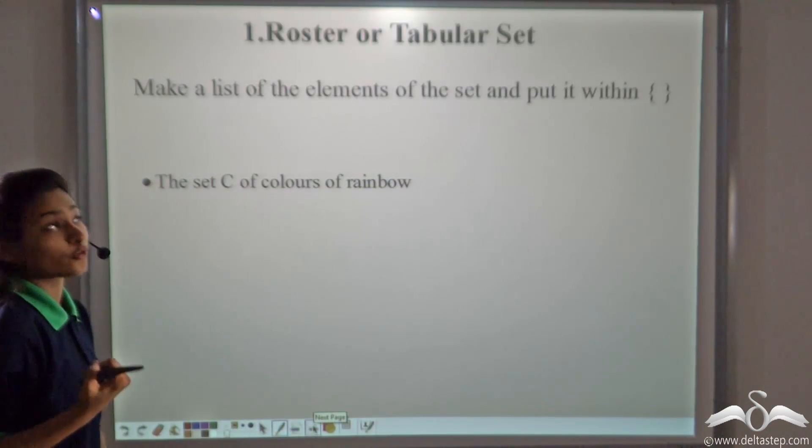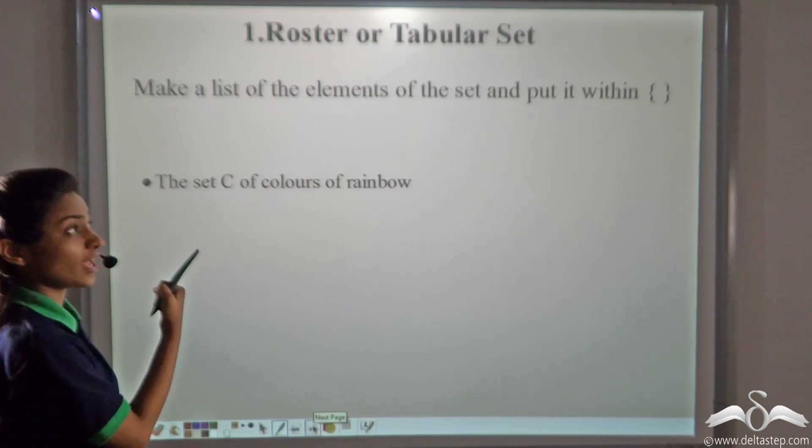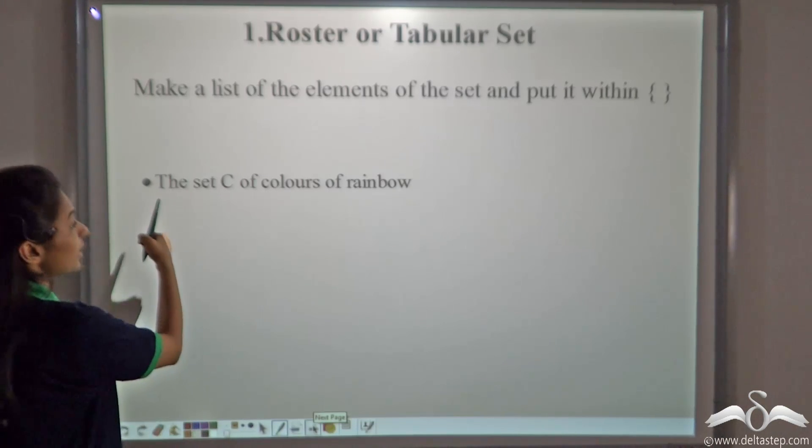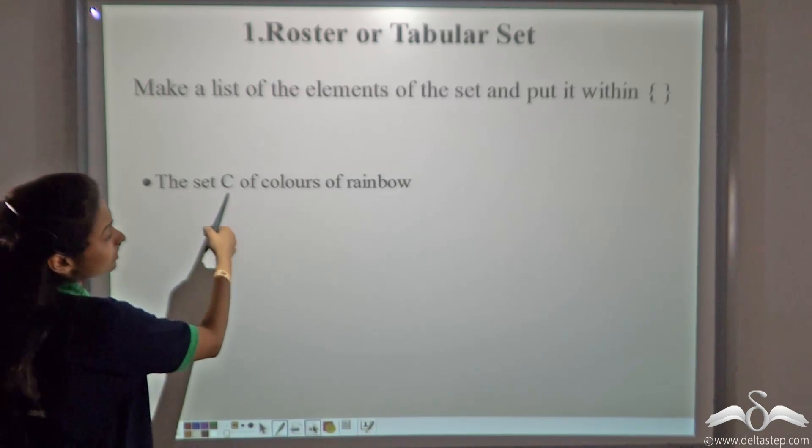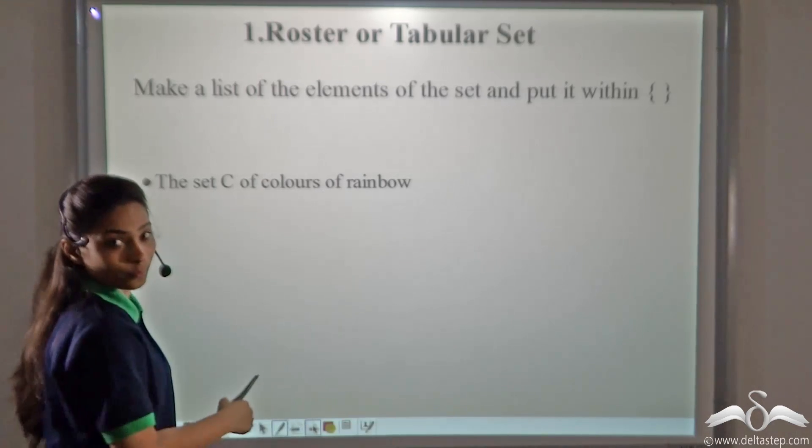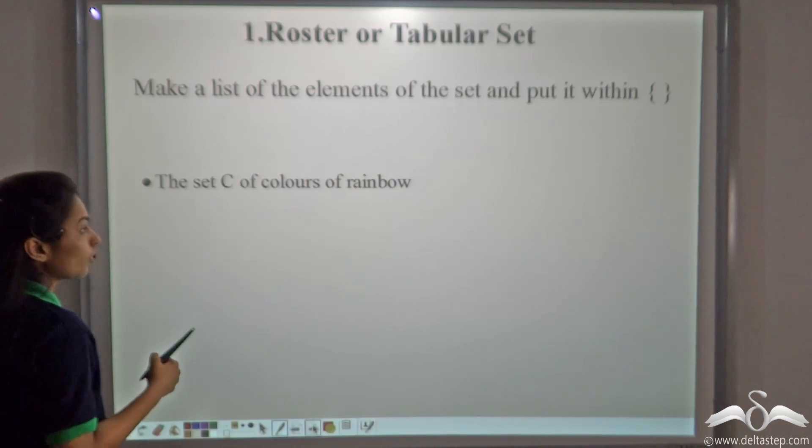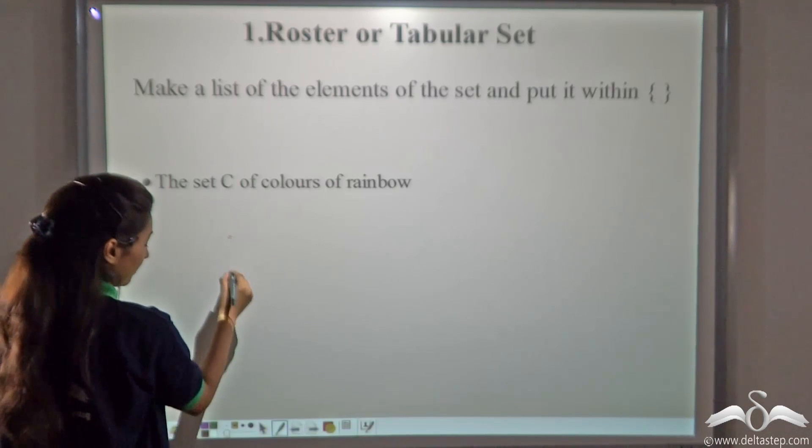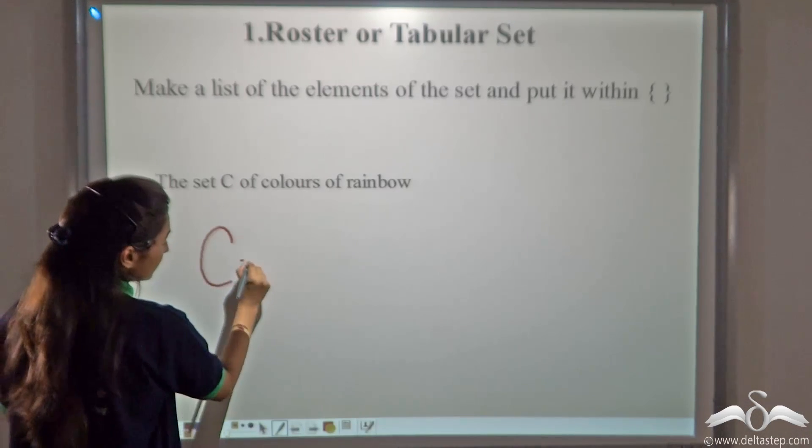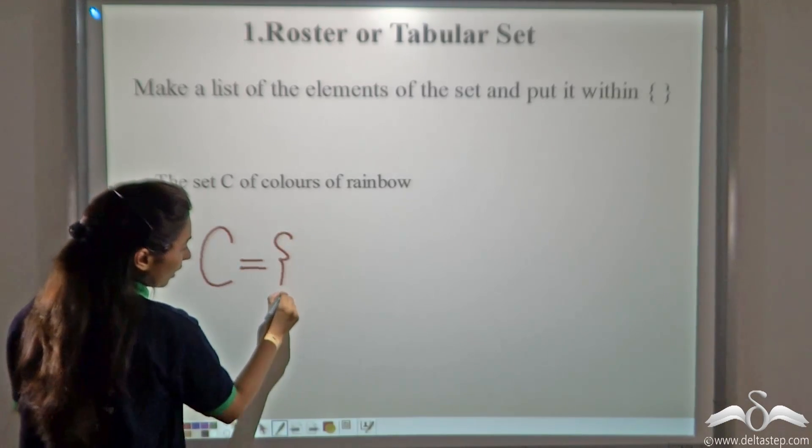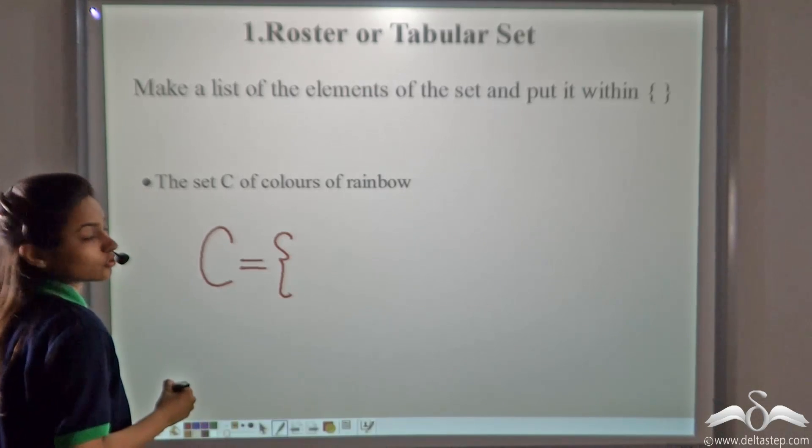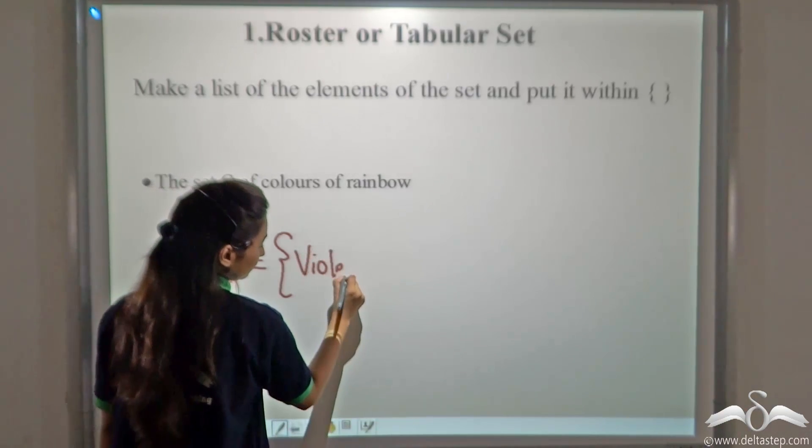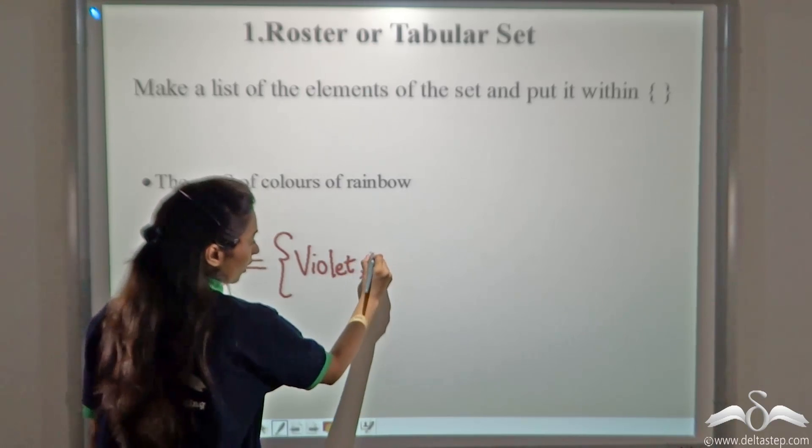Now, in roster or tabular set, we will make a list of the elements of the set and put it within curly brackets. Let's take the set C, the set C of colours of rainbow. What were the colours of the rainbow? We will make the list of those and write it within the set C. So, C is equal to, open curly brackets, write the elements of this set. Violet, Indigo,